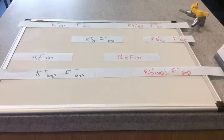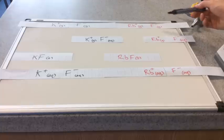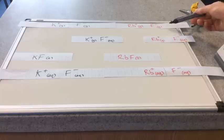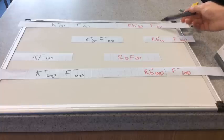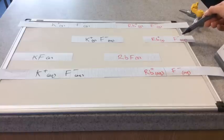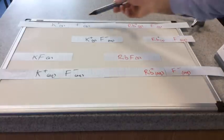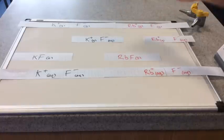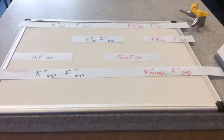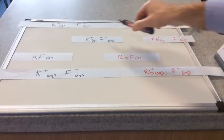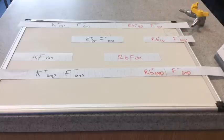The first thing to appreciate is the common enthalpy change, which is the enthalpy change of hydration of the fluoride ion — F minus gas to F minus aqueous. You can see on the black KF side, we've got F minus gas to F minus aqueous, so we'll keep those at the same level.